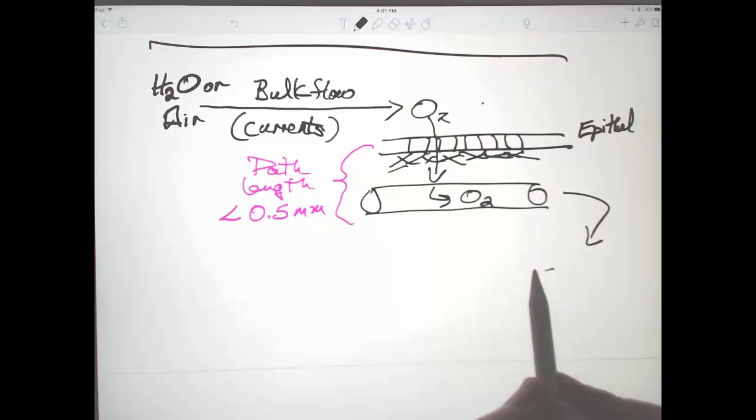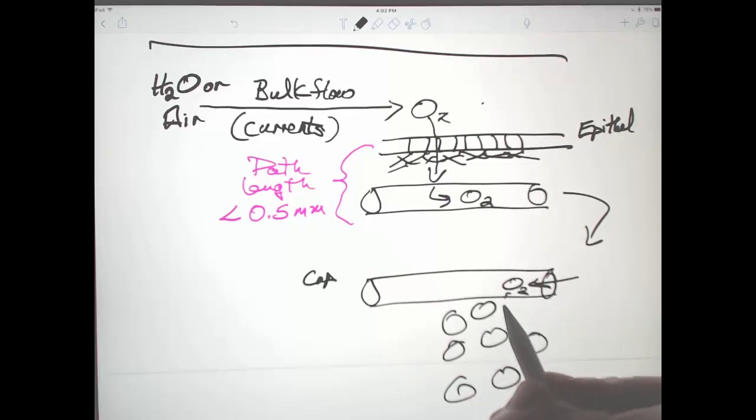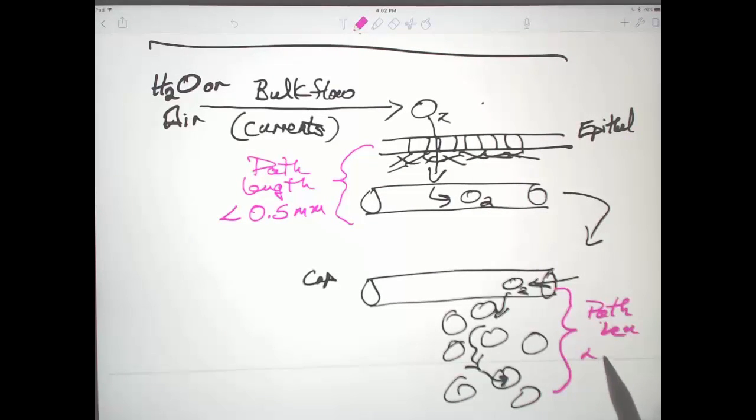And then if we look at where that oxygen is delivered in the animal, so here's another capillary with oxygen coming from, say, a heart, and there are cells outside it that oxygen has to diffuse out and into the individual cells. Again, a path length that's got to be less than 0.5 millimeters, 500 microns.